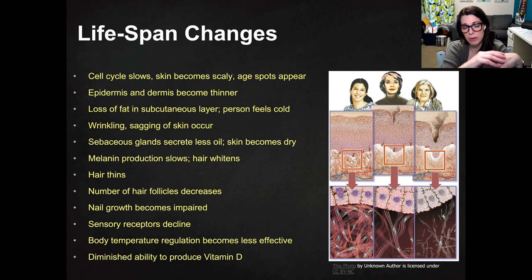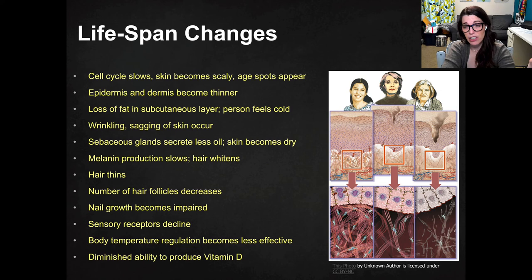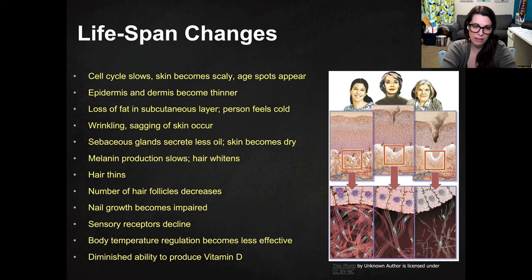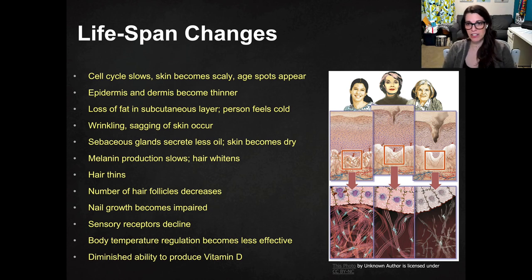There's also a decline in sensory receptors, so you lose some feeling in your hands, extremities, and skin. Body temperature regulation becomes less effective because those skin receptors trigger thermoregulation responses through the hypothalamus — if receptors are less sensitive, homeostasis is harder to maintain. You've also lost the subcutaneous adipose layer. Finally, there's a diminished ability to produce vitamin D, since UV light hitting the skin allows the body to convert cholesterol into vitamin D. Vitamin D deficiency is common, and it increases with age.